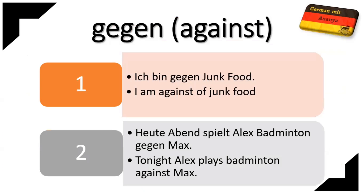G stands for gegen, and gegen means 'against.' For example: 'Ich bin gegen Junk Food' — I am against junk food. Because gegen is an accusative preposition, we always use the noun article in the accusative case, meaning we use the bestimmt and unbestimmt articles of accusative. Another example: 'Heute Abend spielt Alex Badminton gegen Max' — Tonight Alex plays badminton against Max.